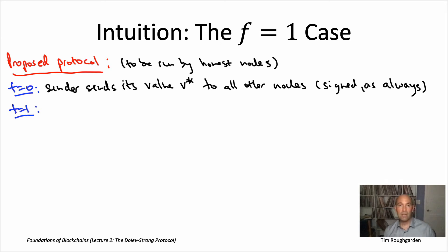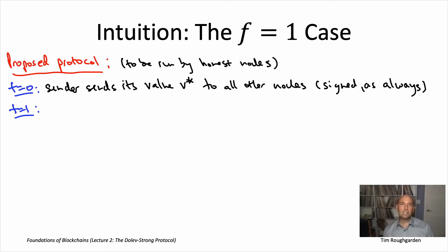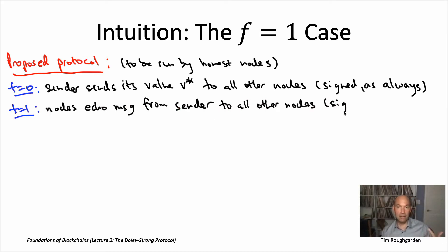Remember, we're only trying to solve Byzantine broadcast under the same assumptions we already imposed on state machine replication — so in particular, we're assuming that crypto exists and the PKI assumption holds, meaning all nodes know everybody's public keys a priori. At time t equals one, because we're in the synchronous model, all nodes have received those messages. This is the step in which the nodes compare notes — they tell each other what they heard from the sender, echoing the message the sender sent them, which was signed by the sender, and then signing it themselves to attest to what they received.